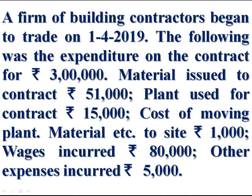Materials issued to contract Rs 51,000. Plant used for the contract Rs 15,000. Cost of moving plant, material etc. to site Rs 1,000. Wages incurred Rs 80,000. Other expenses incurred Rs 5,000. These are the expenses incurred on this contract during the year.